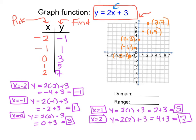Now I have 5 nice points plotted and I can start to see the shape of that line. Once I can see the shape, I'm going to go to my graph and connect those dots in a linear fashion. You can see my line right there.